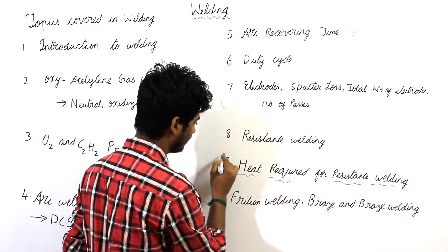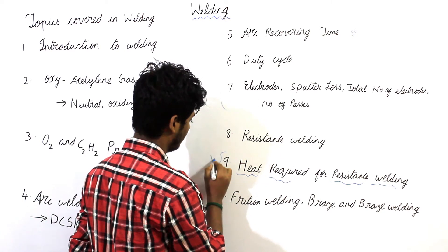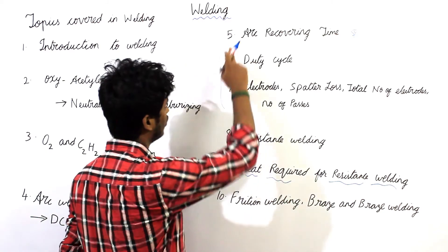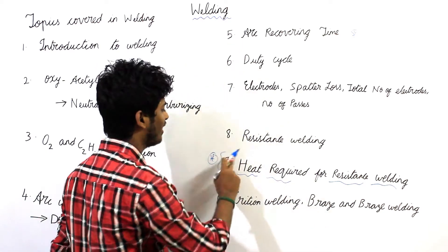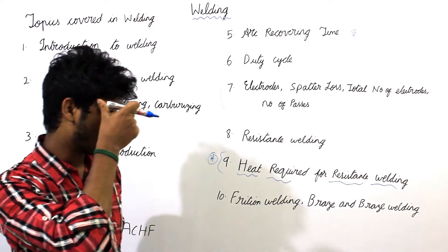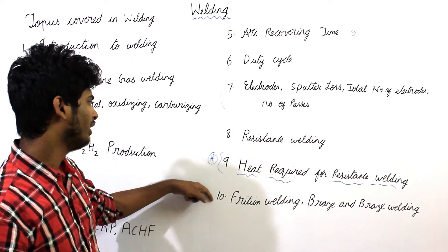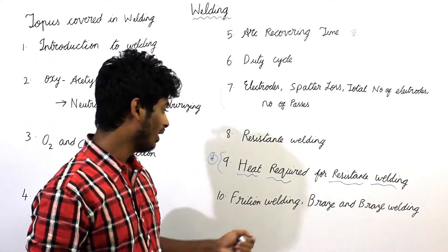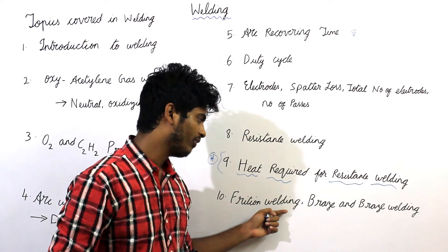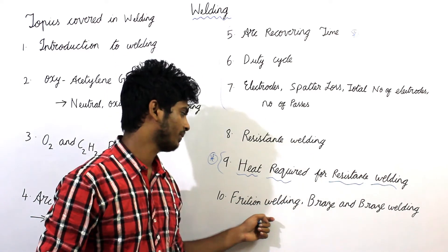The ninth topic is also problem-based. Topics five, six, seven, and nine are very important for solving problems. The fifth topic is friction welding, and under friction welding we also have some formulas for solving problems.